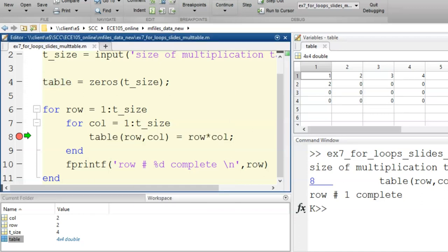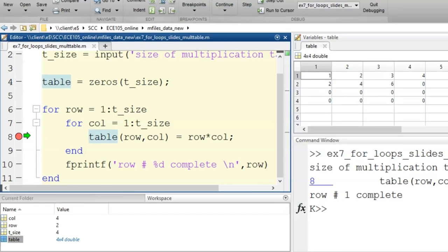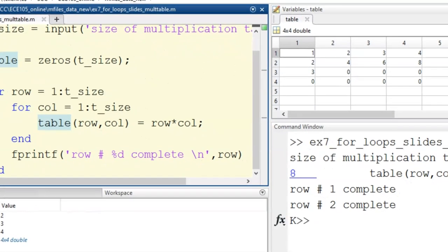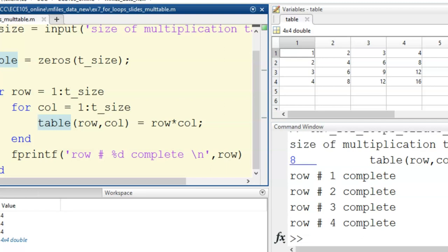This process is then repeated many times. Each time I click continue, we can see a new index is filled in. Each time a row is complete, a sentence is printed in the command window. And eventually, we compute each value in the entire multiplication table.